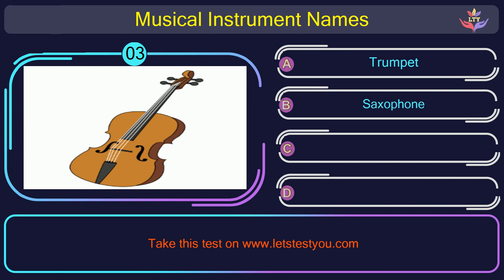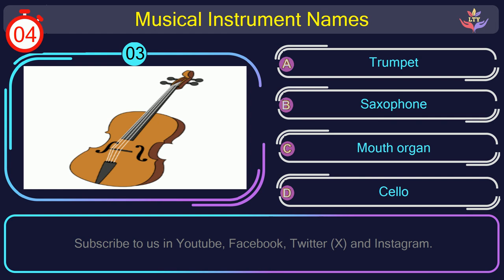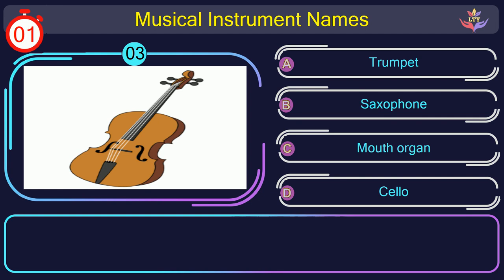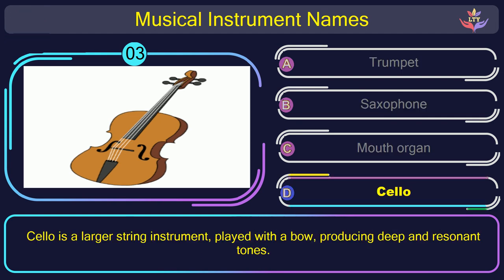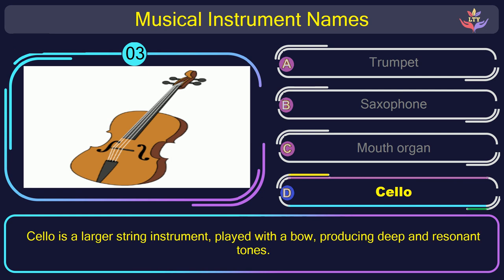Question number 3. What is the name of the musical instrument in this picture? The correct answer is option D: Cello. Cello is a larger string instrument played with a bow, producing deep and resonant tones.